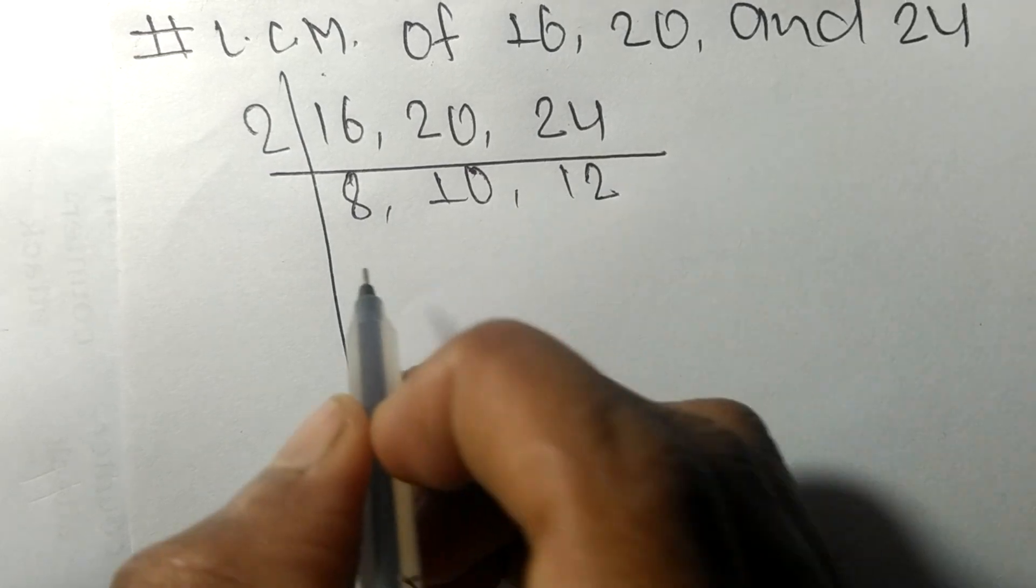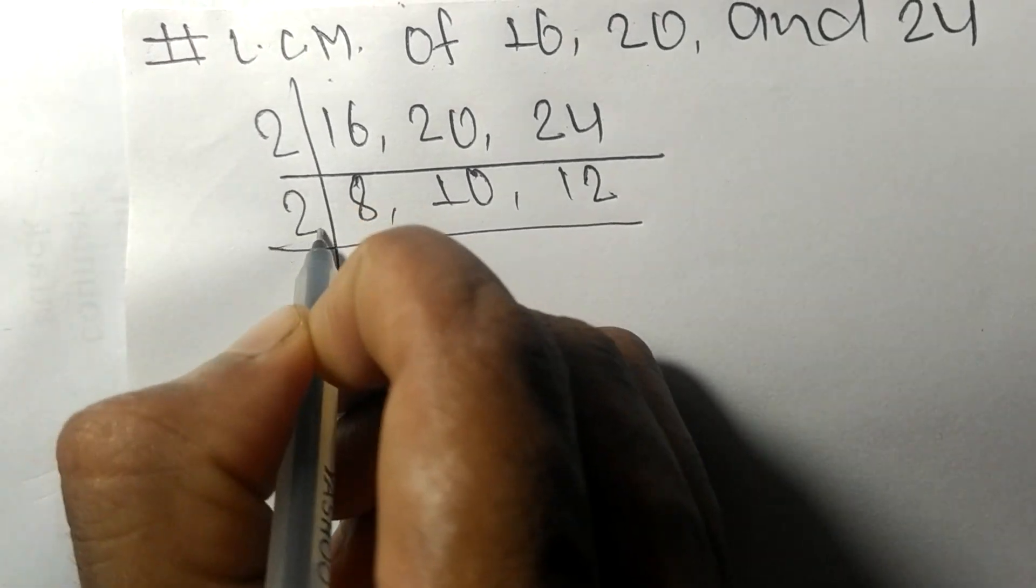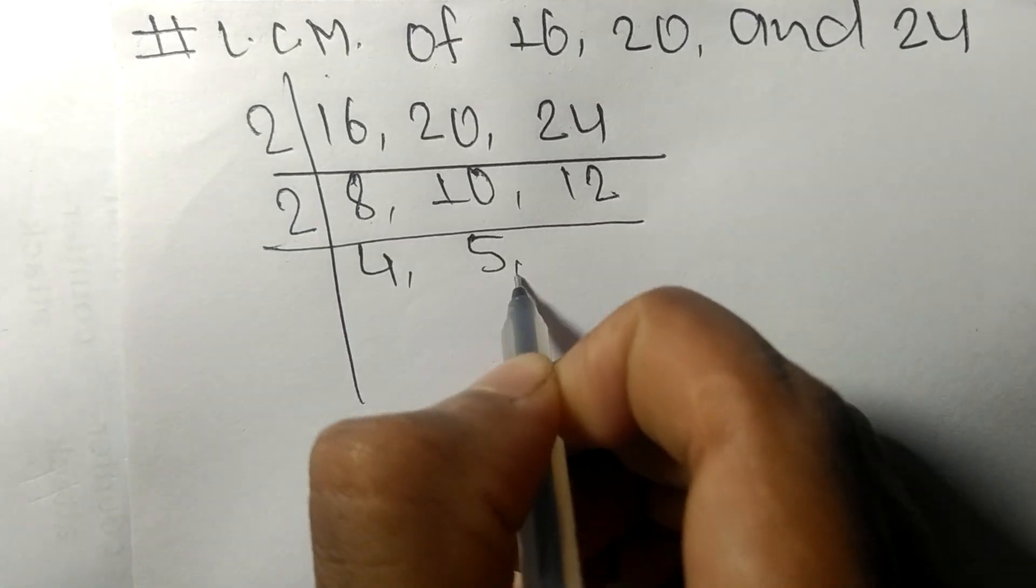Again, all these numbers are divisible by 2: 2 times 4 means 8, 2 times 5 means 10, 2 times 6 means 12.